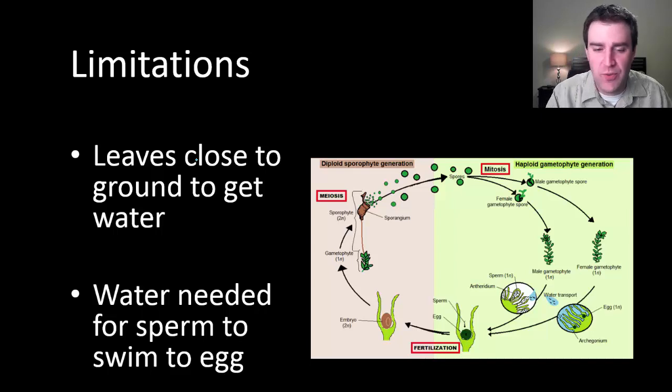There's really two reasons. Number one, they're really small because their leaves have to be really close to the ground where the water is, because their ability to move the water to their leaves is somewhat limited.